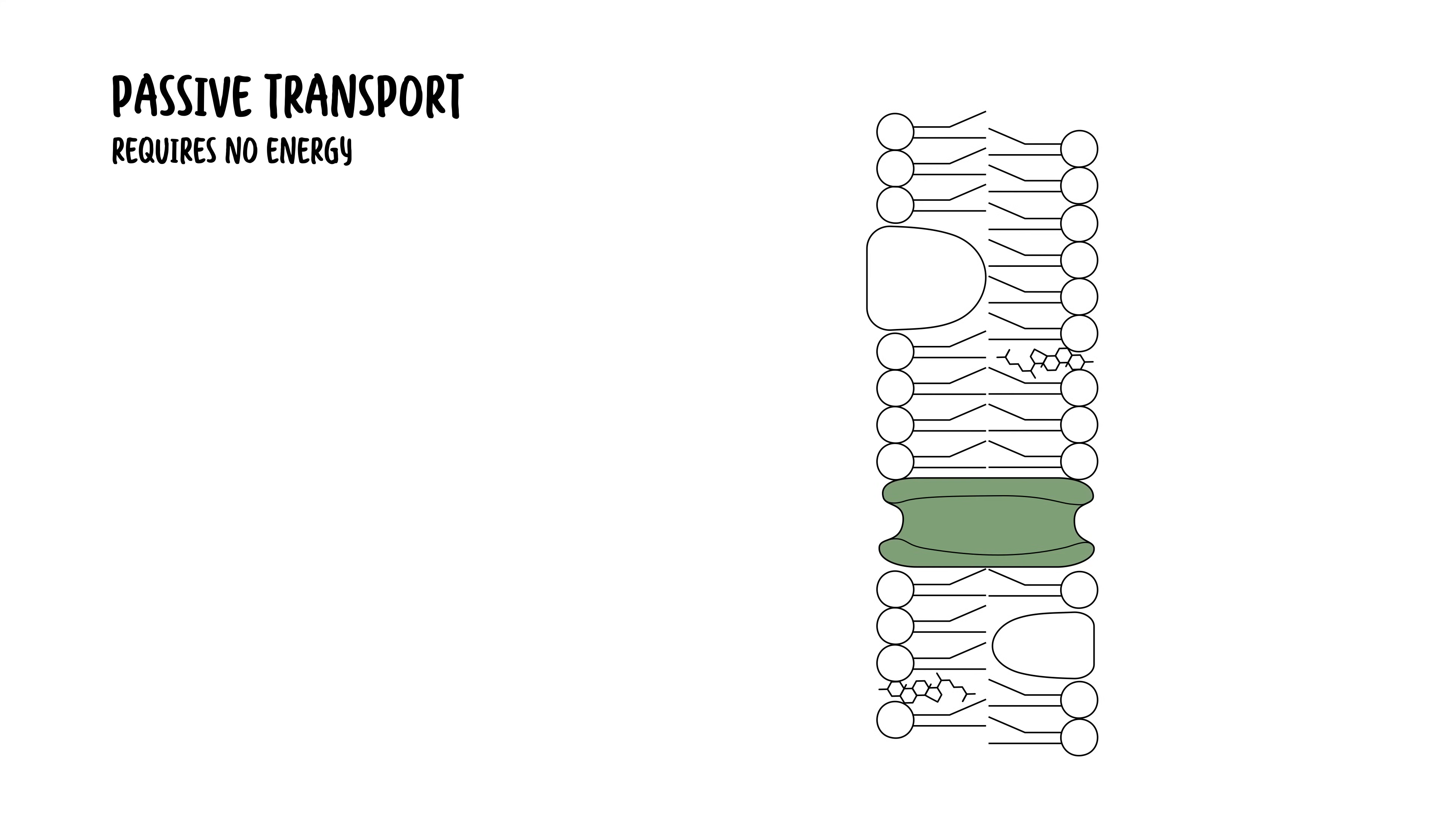Passive transport includes simple diffusion. Diffusion is essentially where you have movement of a molecule from an area of higher concentration to an area of lower concentration. Molecules tend to spread out. So simple diffusion is where you have movement of small nonpolar molecules such as oxygen and carbon dioxide moving across the membrane down their concentration gradient.